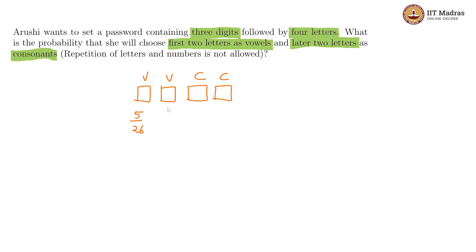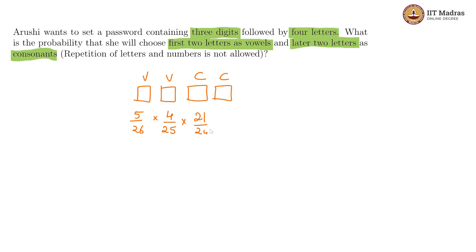Now in the next box, the vowel from the first box should not come up again. So we get 4 by 25, because one letter is taken away. Then we have 24 letters left, but these are consonants now — there are 21 consonants — so 21 by 24 here. And lastly, this would be 20 consonants remaining divided by 23.